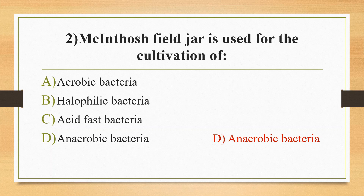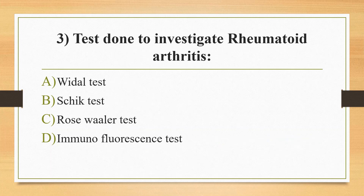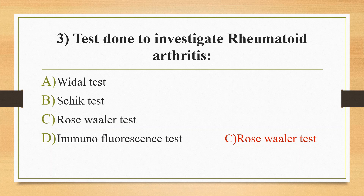Third question: the test done to investigate rheumatoid arthritis — option A Widal test, option B Schick test, option C Rose-Waller test, option D immunofluorescent test. The answer is option C, Rose-Waller test, which is a slide hemagglutination test. Option A, Widal test, is used to detect typhoid fever, and option B, Schick test, is a skin test to determine susceptibility to diphtheria.